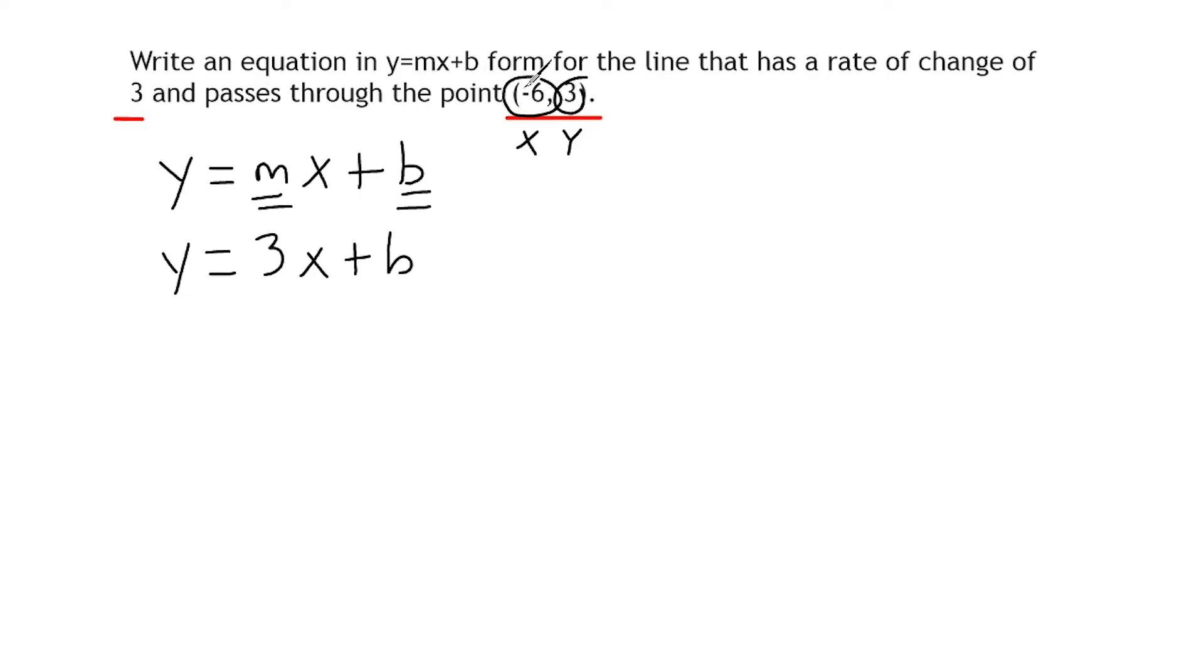So the x value is always our input. What we're going to do is we are going to take the slope of 3, or the rate of change, and we are going to multiply it by the input of negative 6. And then we are going to substitute y, which is our output, with 3.